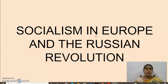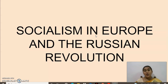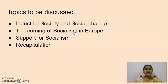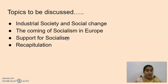In the last class we understood about how people started to adopt the idea of socialism in Europe and how people were differentiated based on their opinions towards changes. How the French revolution affected the people. We have seen about the liberals, radicals, and the conservatives and their ideologies. We have also seen the industrial society and the social change. Now I am going to re-glance that concept and we are going to see the coming of socialism in Europe — the entry of socialism, how it started, support for socialism, and then we will go for a recapitulation.